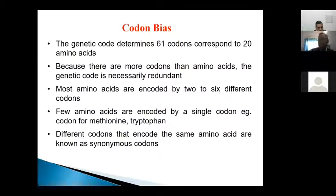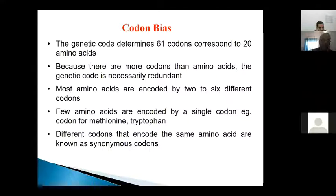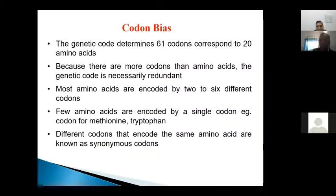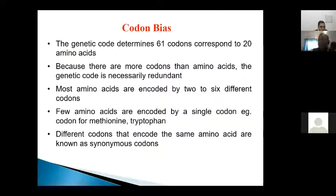What is codon biasing? Out of 64 codons, only 20 amino acids are encoded. 18 amino acids are coded by more than one — up to six different codons — and only two amino acids, methionine and tryptophan, are coded by only a single codon.